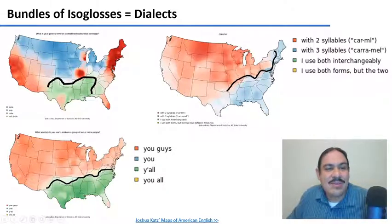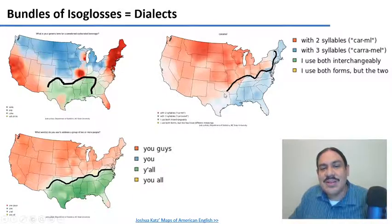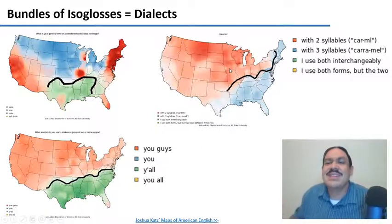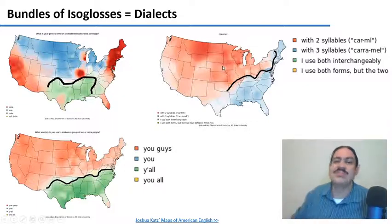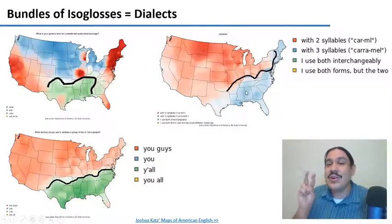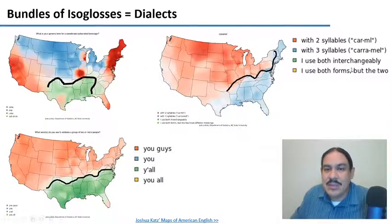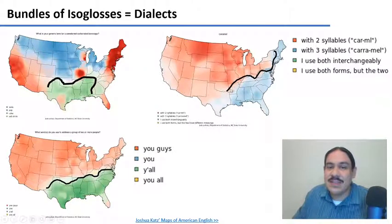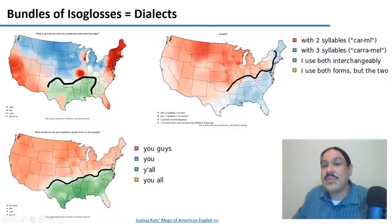Let's look at more maps of the US. Here we have our isogloss separating Coke from other words. This next map indicates how you pronounce the word 'caramel' — the candy, the toffee. Some people use two syllables: 'caramel.' They are in the area in red. Some people use three syllables: 'caramel.' They are in the area in blue. You can see that places like Mississippi and Louisiana are on one side, and Nebraska is on the other side of this isogloss — a line separating the two-syllable variant from the three-syllable variant.